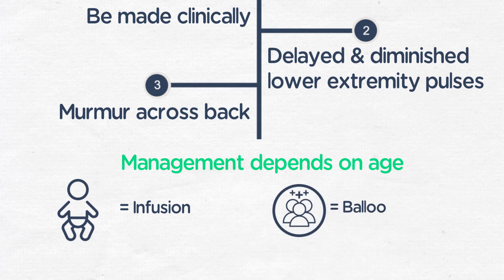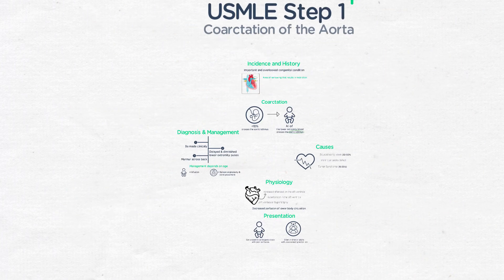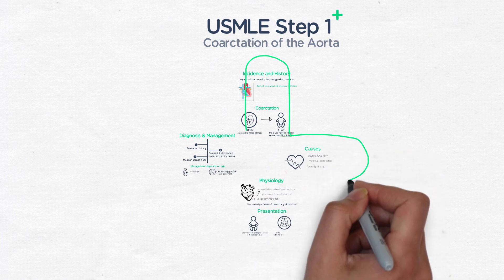In adults, balloon angioplasty and stent placement is often the preferred technique, though surgery remains an option. Hypertension often improves, though this can remain a long-term concern in patients who've had repaired coarctation, and they should have lifelong congenital cardiology follow-up.